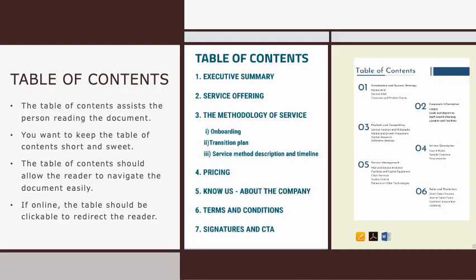Next we should include the table of contents, which provides a summary of each page or section of the document. Usually we want to use one or two words that sum up what is going to be on that page. The reasoning of the table of contents is to help the client find where certain information is within the document. We want to keep the table of contents short and sweet, as the average human attention span is about 10 seconds, so we don't want to bombard them with tons of information. If the document is on a computer or in an e-file, the table of contents should be clickable so it instantly brings you to that page.